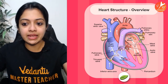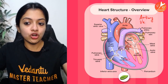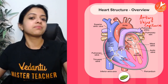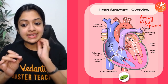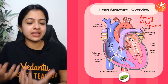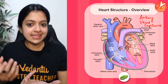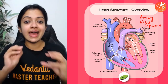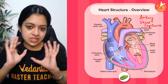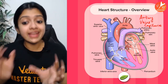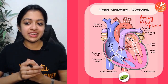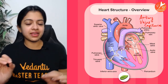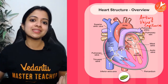Always remember: arteries carry blood away from the heart. We've got three major kinds of blood vessels: arteries, veins, and capillaries. Veins carry blood towards the heart. Capillaries are one cell in thickness, exchanging oxygen and carbon dioxide between blood vessels and the cells and tissues of the body. Aorta is the biggest artery. The pulmonary artery and pulmonary vein are the only exception in terms of carrying oxygenated and deoxygenated blood, but all arteries carry blood away from the heart and all veins carry blood towards the heart.